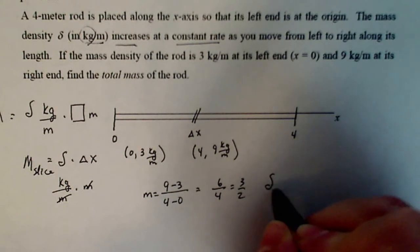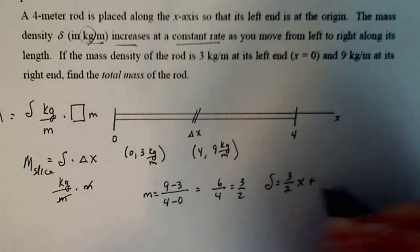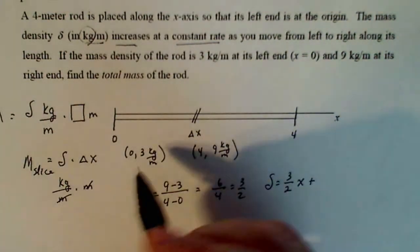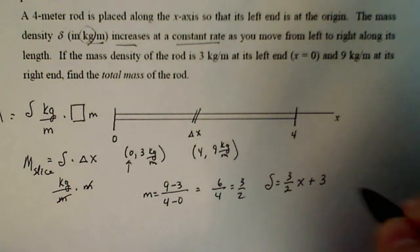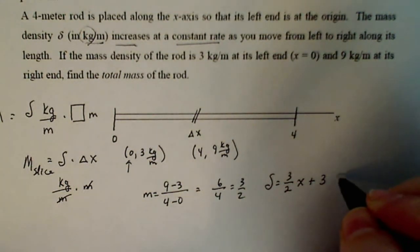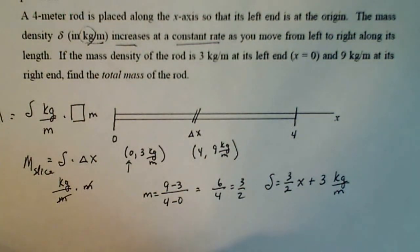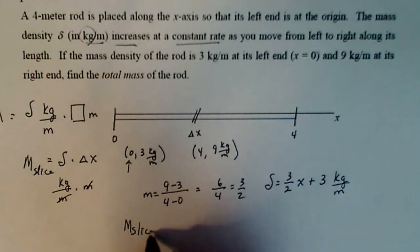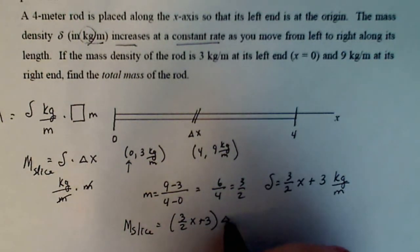And then density is going to be mx plus b, which is my y intercept. Since I have a value for zero here, my y intercept would just be three. So my density function is three over two x plus three, which is kilograms per meter. So the mass on my slice is going to be three over two x plus three times delta x.